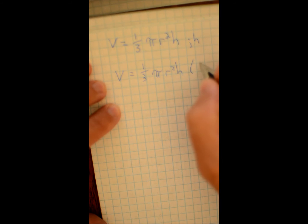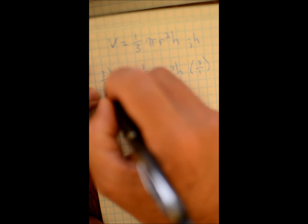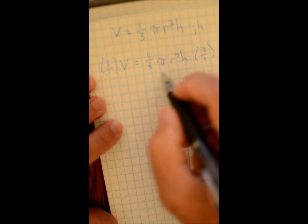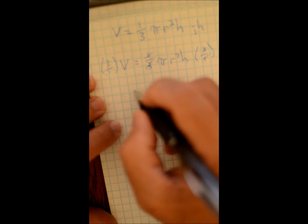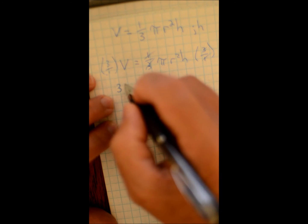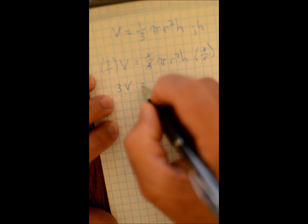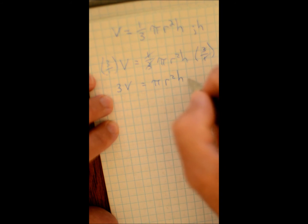And then multiply this side by three, and this side by three. I'll see that and that turns into a one. This is a three, so you get three v equals pi r squared h.